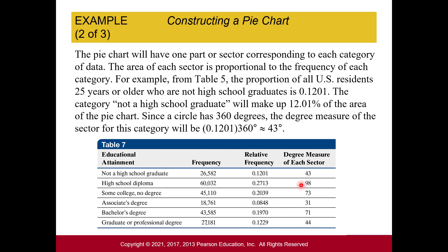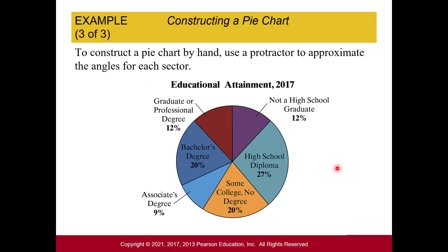Here is our pie chart for the 2017 educational attainment data. The biggest slice is high school diploma — a 98-degree angle representing 27% of the sample. Since 90 degrees is a right angle like the corner of a paper, notice this angle is just a little more than that. The smallest slice is associate's degrees at only 9% of the sample, giving it the smallest angle of all.